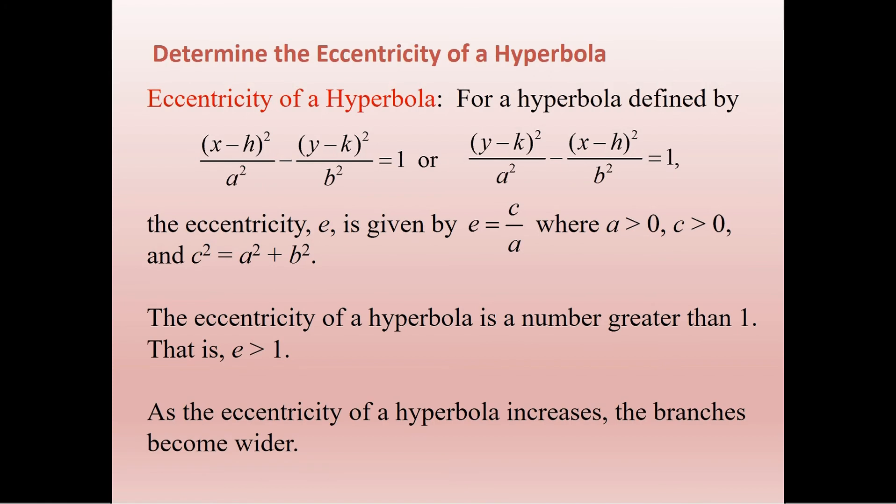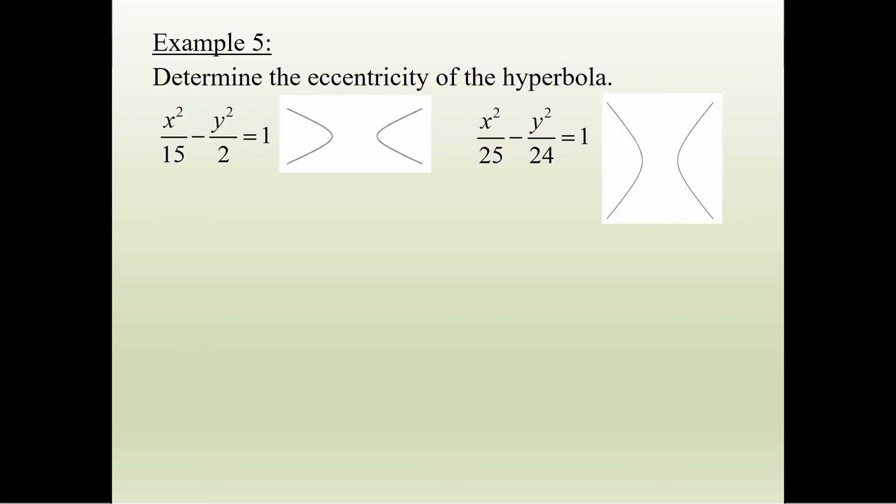Now, as the eccentricity increases, the branches become wider and wider. Notice, if c gets bigger and bigger difference from a, if a is small but c is big, then we're going to get a much narrower branch. However, if the a and the b are close together, it'll start to widen out and get fatter and fatter.